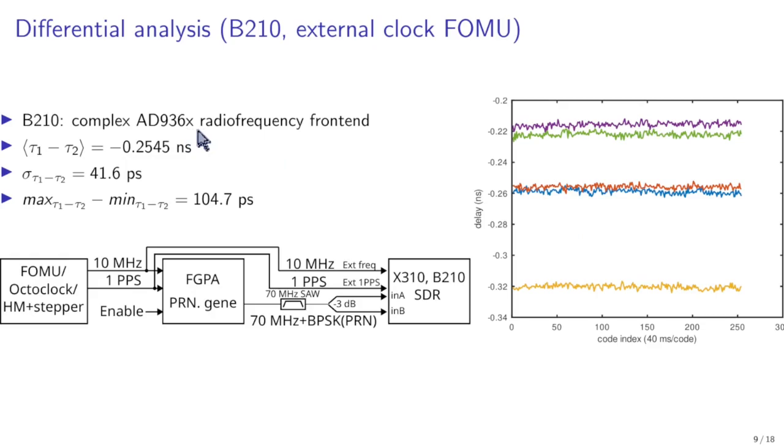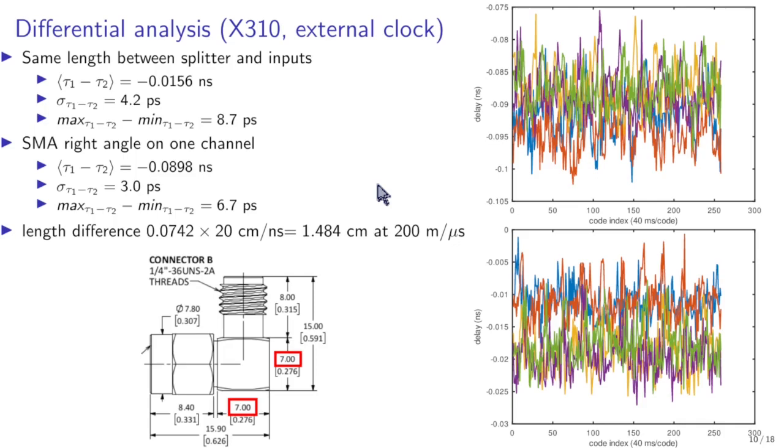So part of this fluctuation is coming from the AD9361 front end which is a black box we have no idea what the delays are. If on the opposite we take an X310 which is directly the A2D converter going to the FPGA we see that again we have shrunk the delay from one measurement to the other. Each color is a new sequence of measurement, along the x-axis is the one measurement for 10 seconds and you see now that all the measurements are fluctuating. So within each curve we have something like four picoseconds standard deviation and 8.7 picosecond maximum to minimum so that's sub 10 picosecond.